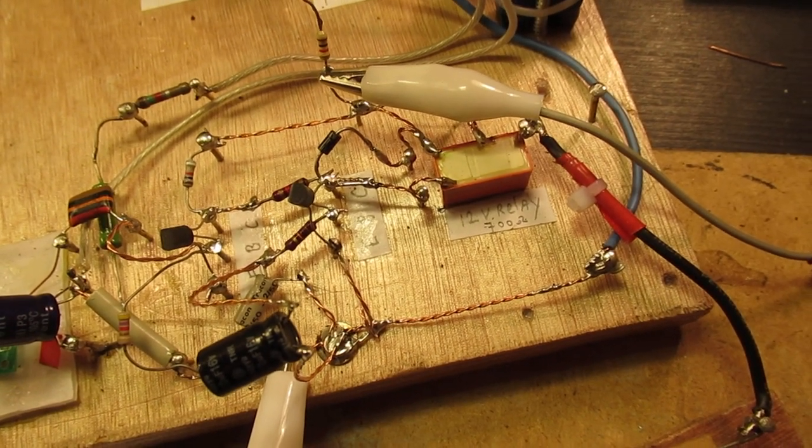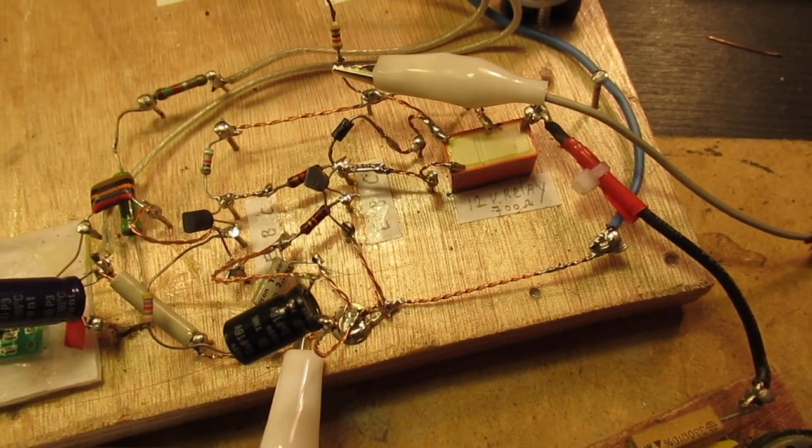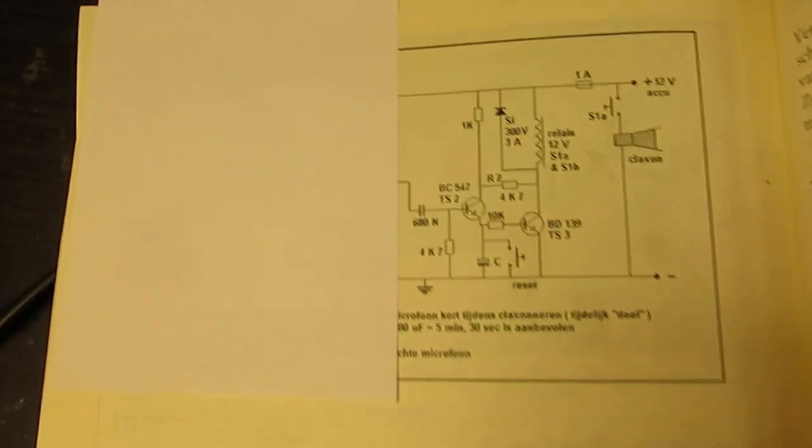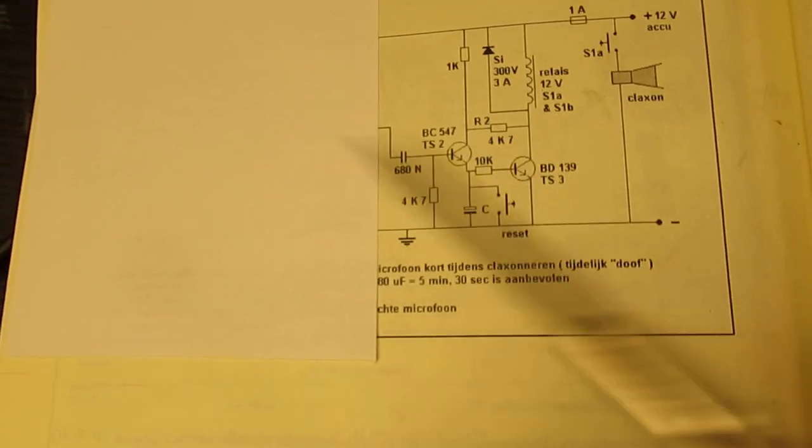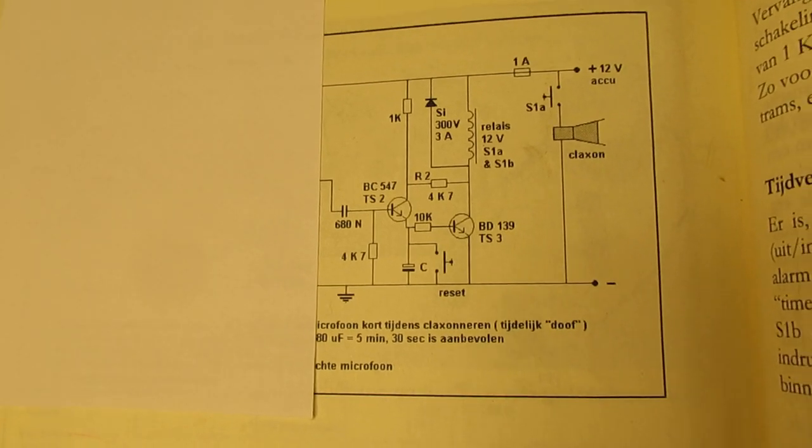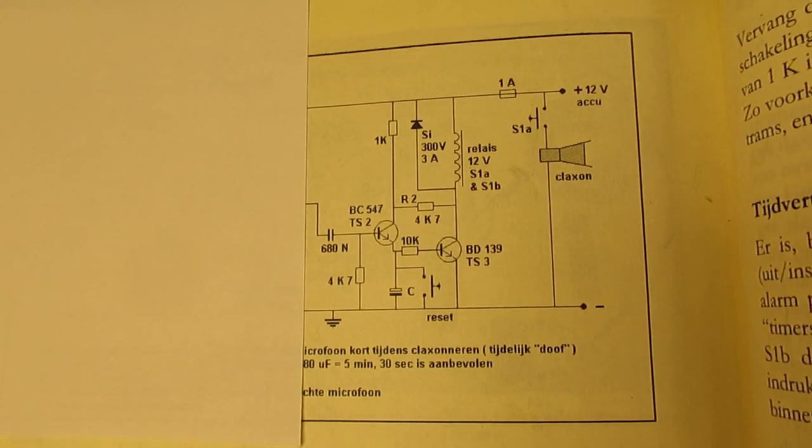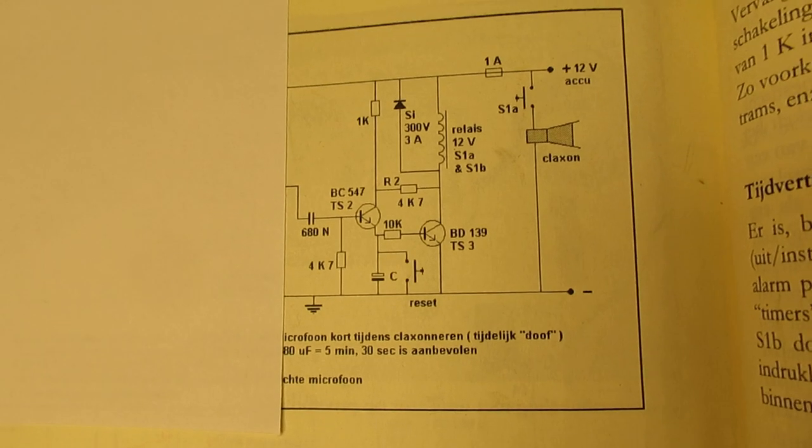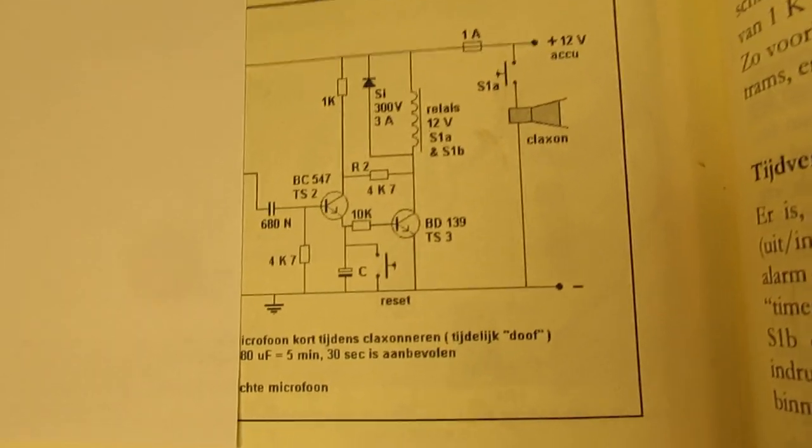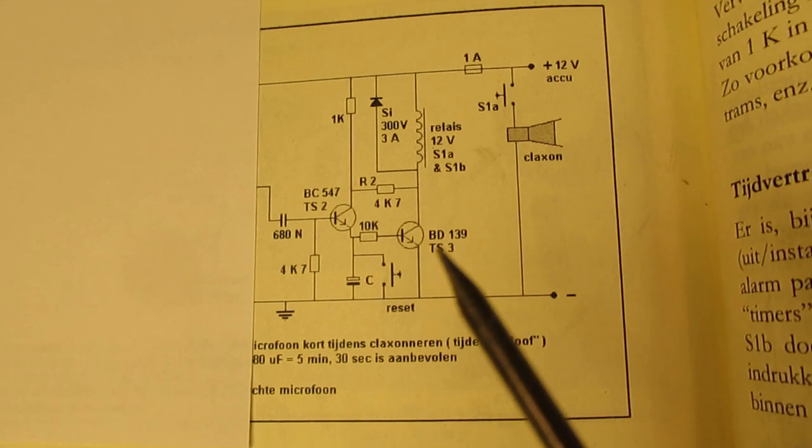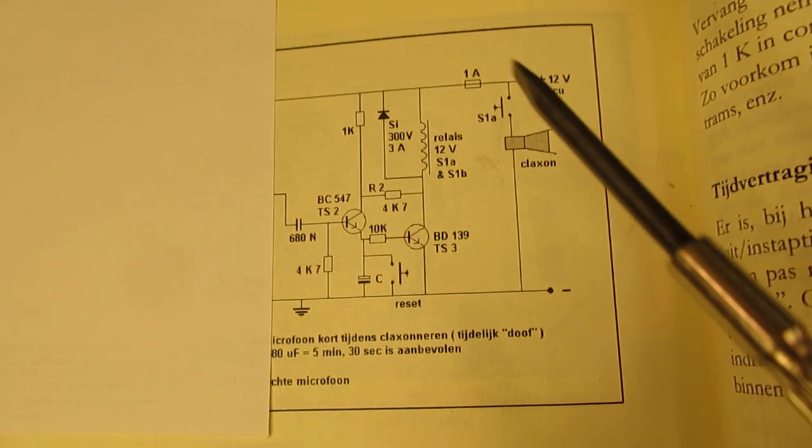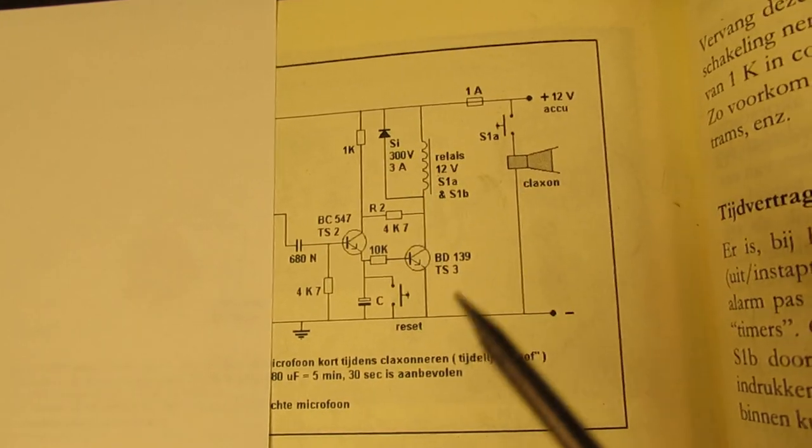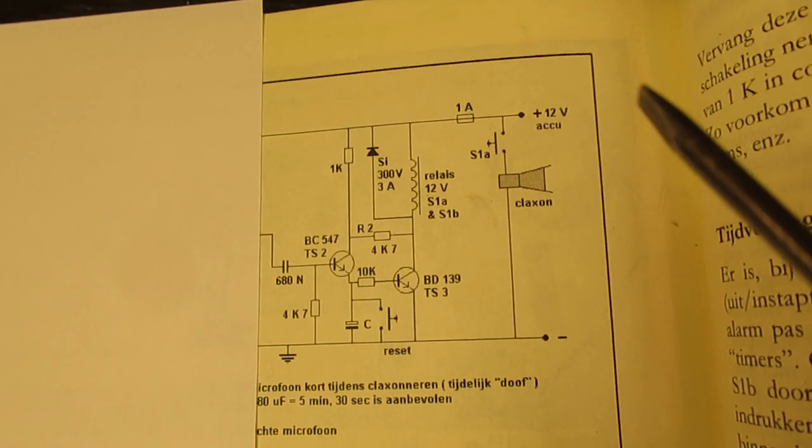And I derived it from one of the circuits of my books and that's here. This is by the way the key circuit on which the whole relay circuit is based. In this circuit I have used the BD-139 because the situation here was that there was a quite high current flowing through the relay. That was necessary.